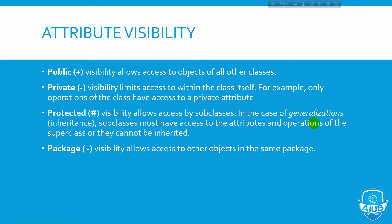Protected visibility allows access by subclasses — in the case of generalization and inheritance. Subclasses must have access to the attributes and operations of the superclass, or they can be inherited. Package visibility allows access to objects in the same package.